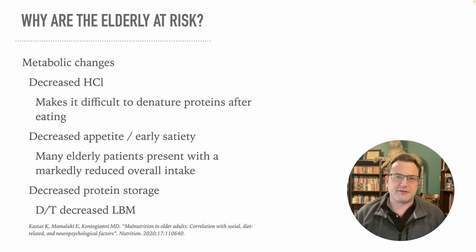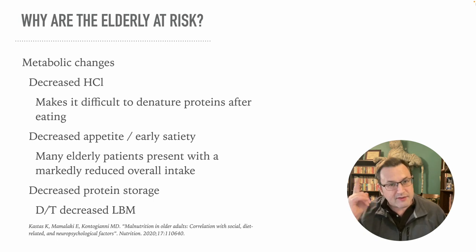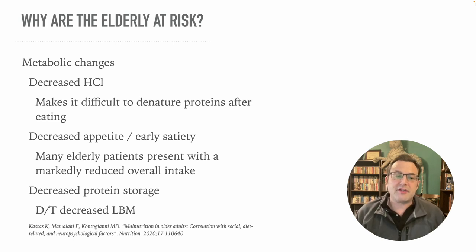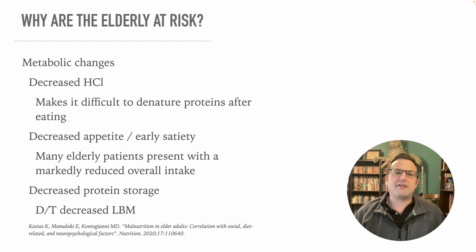What typically happens with someone with a decreased appetite — at least for an elder — is they'll often go for the starch first. So they may be getting enough calories but not enough protein. They also have decreased protein storage. Remember that decreased lean body mass means less of that metabolic sponge that holds water, protein, and glucose — so a decrease in that decreases the amount of storage a person has.